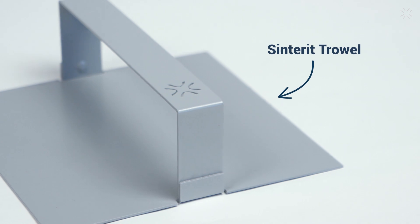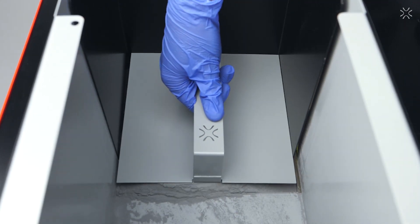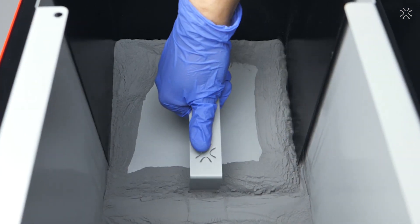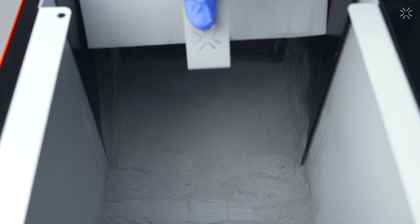Centerit trowel isn't a new device, but it was redesigned to fit the whole feedbed. Now the tamping process is faster and is done in just one move. This ensures uniform pressure distribution and proper powder density.